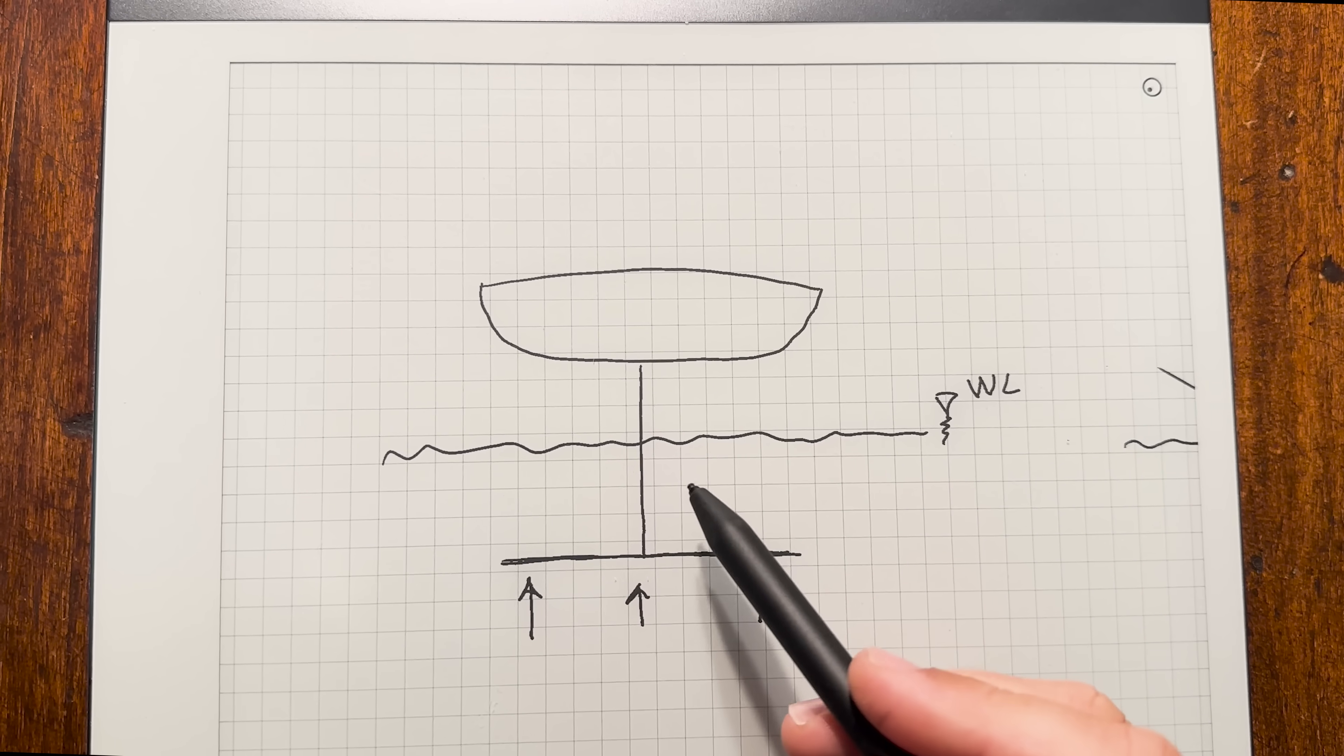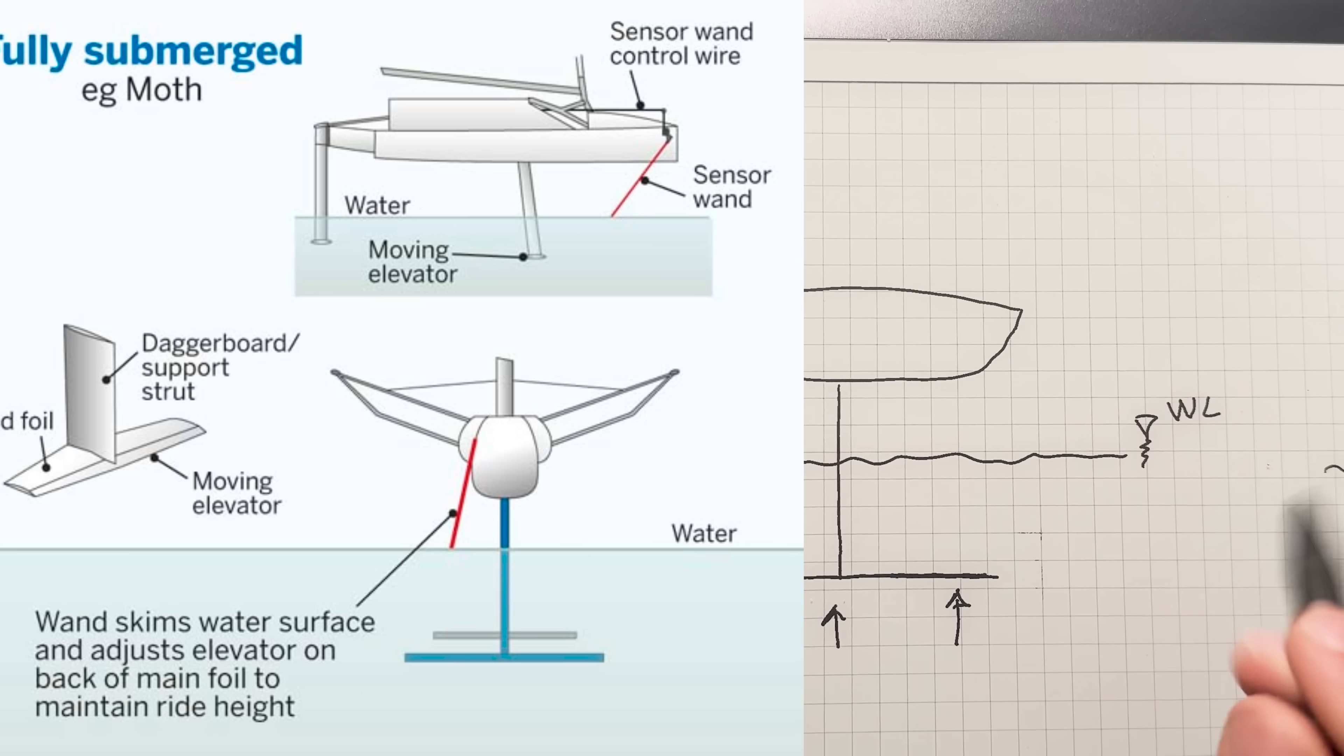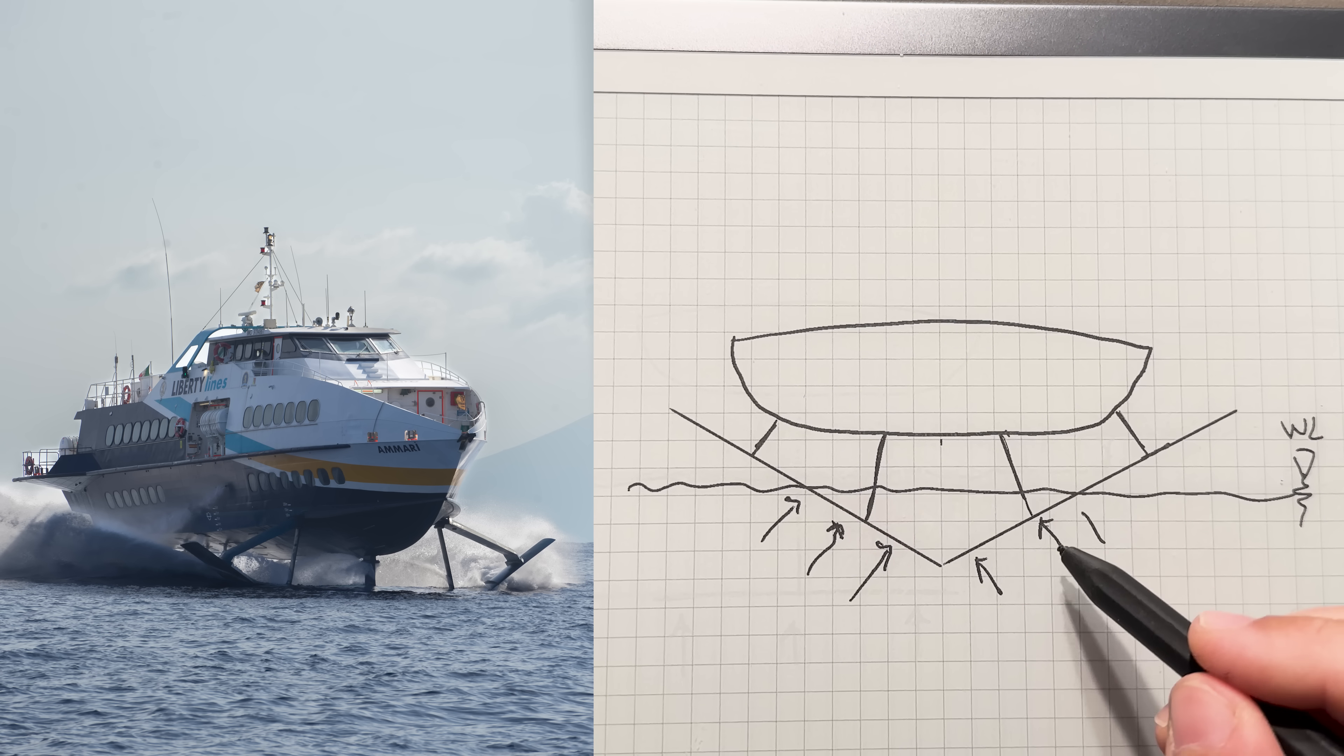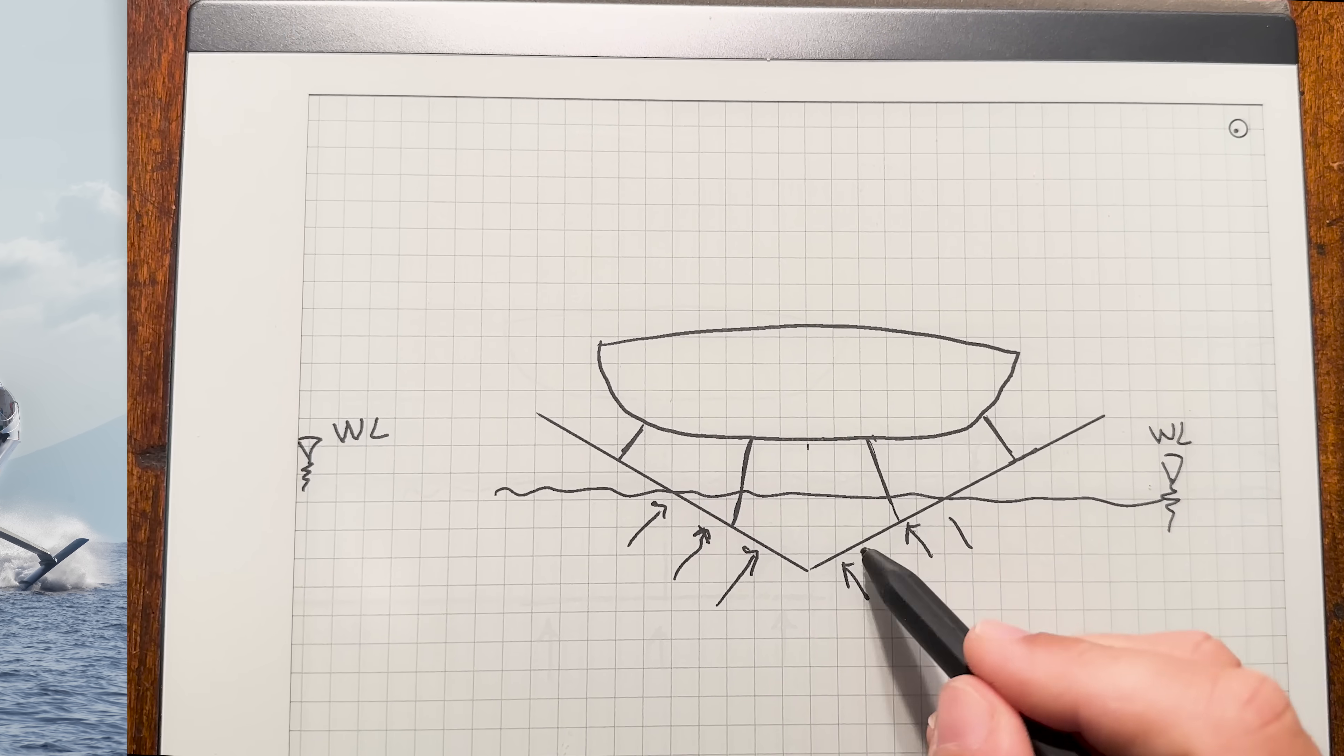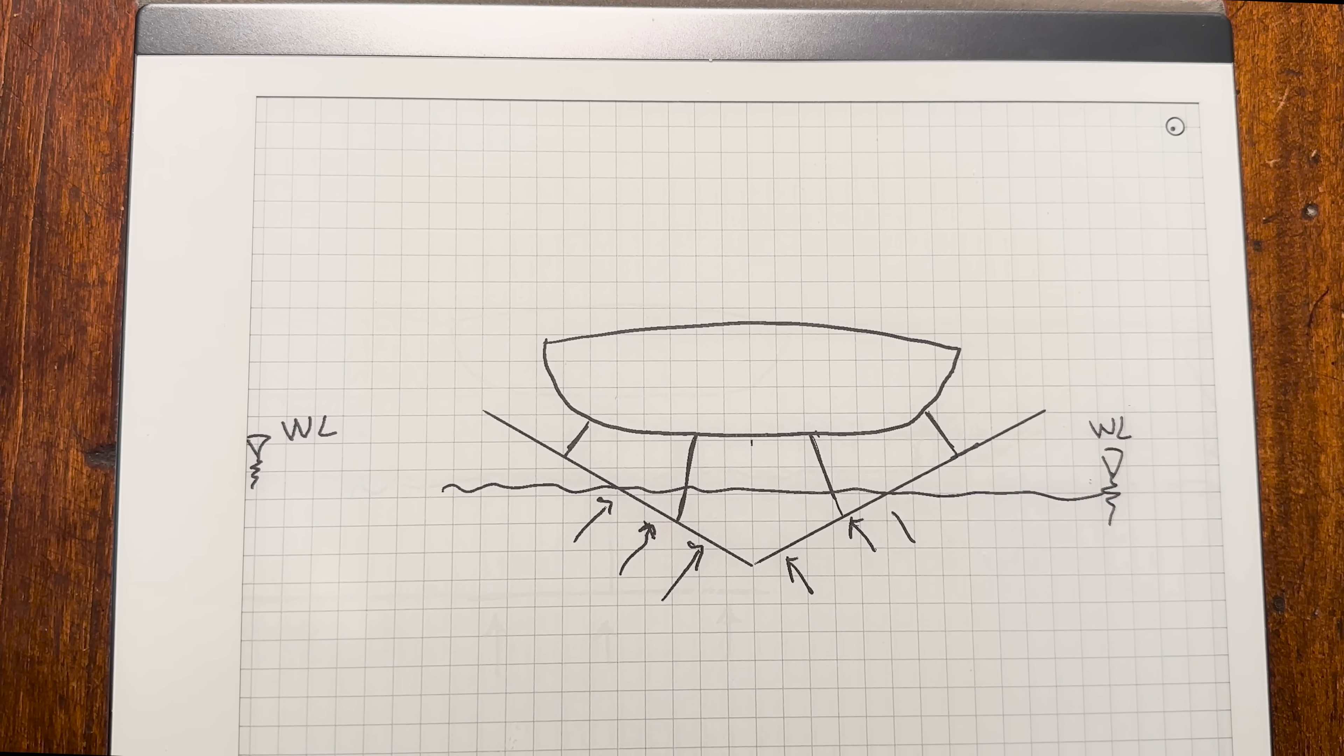This T-foil configuration is not stable, its vertical equilibrium is neutral in the water, it needs a control system. There are some stable foil configurations as the V-foil. When speed increases, lift increases, then the boat exits from the water, but also the immersed surface of the V-foil decreases, therefore the lift decreases and this guarantees the vertical stability.